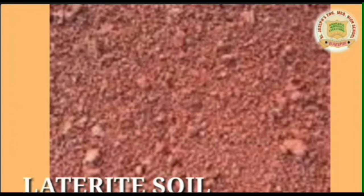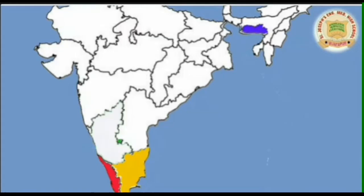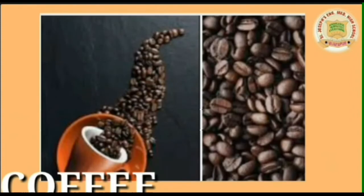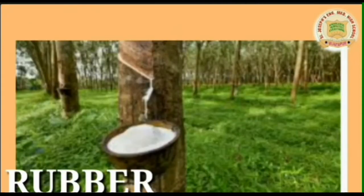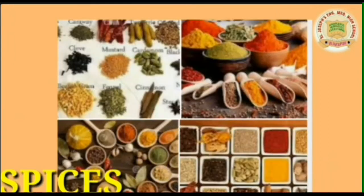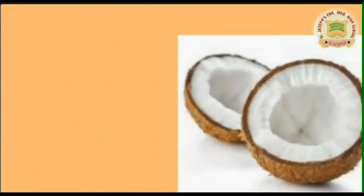Now comes laterite red soil. Laterite red soil is found in places receiving heavy rainfall — Kerala, Tamil Nadu, and Meghalaya. With proper management, this soil can be used to cultivate crops like tea, coffee, rubber, cashew, spices, and coconut.